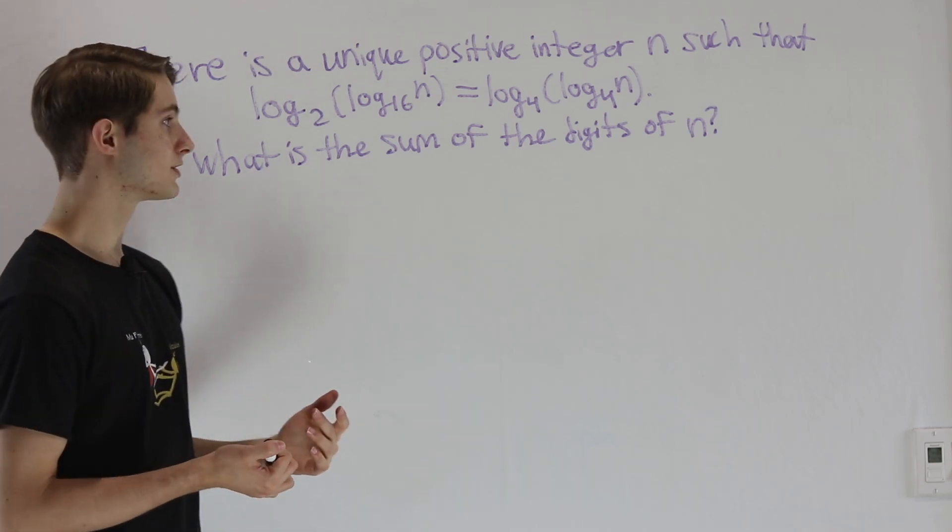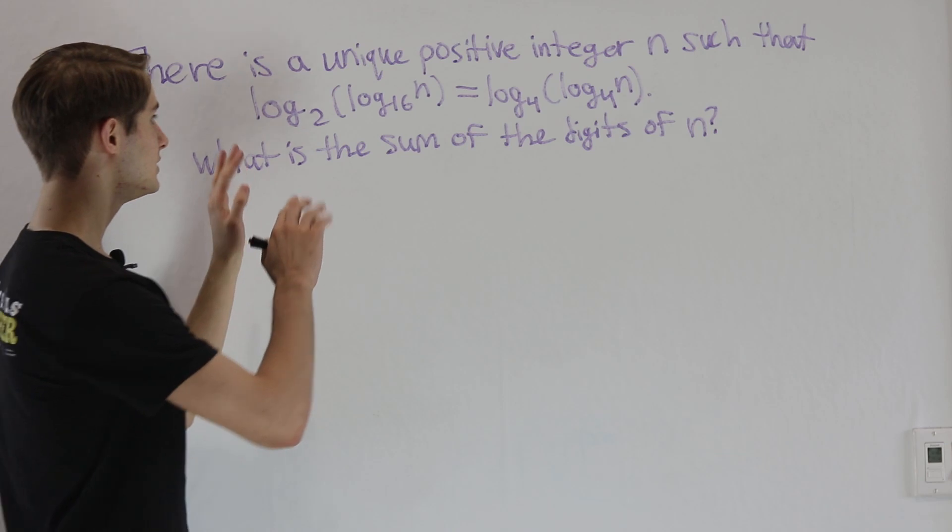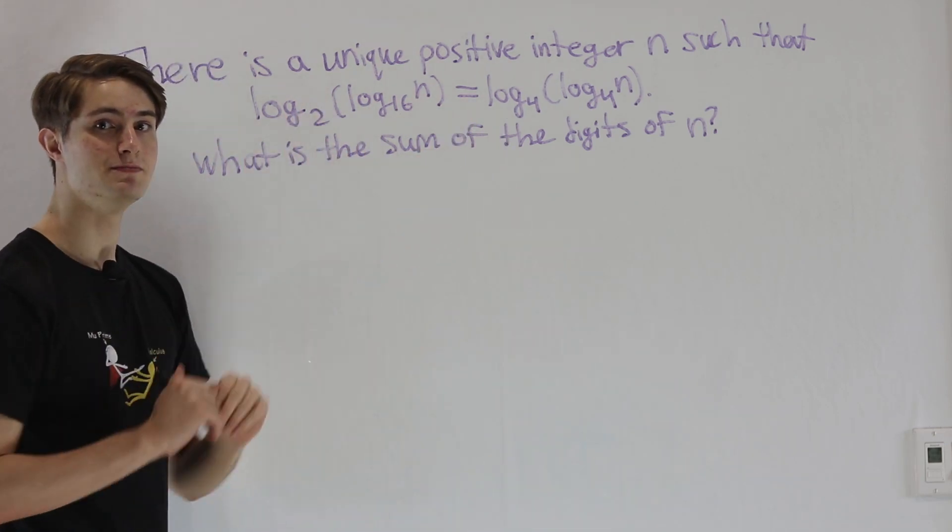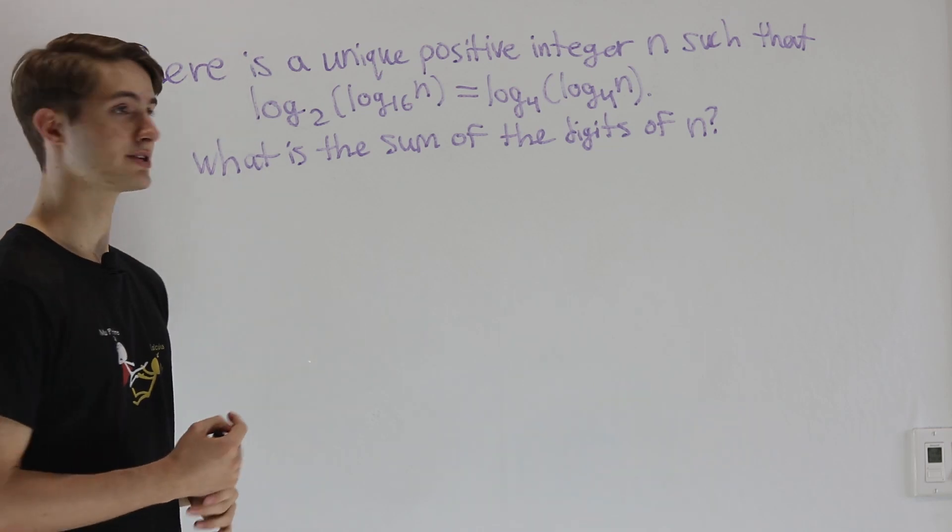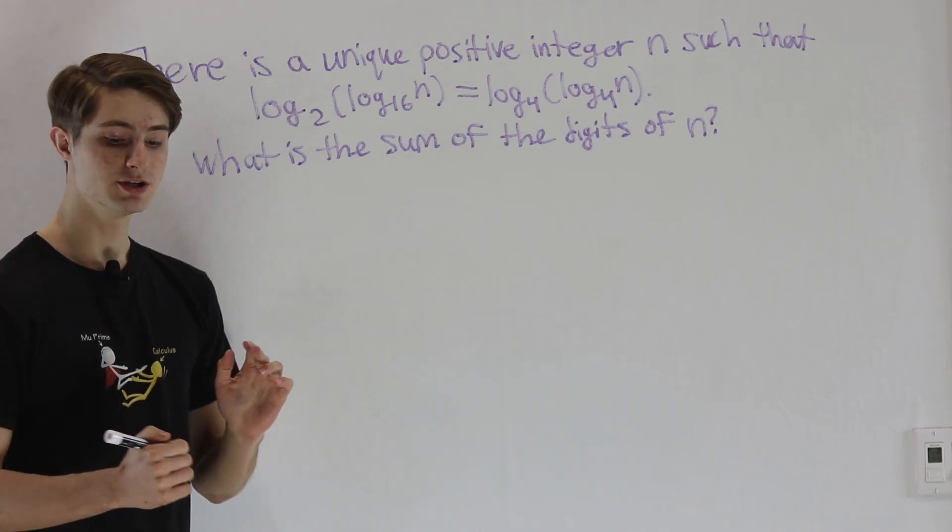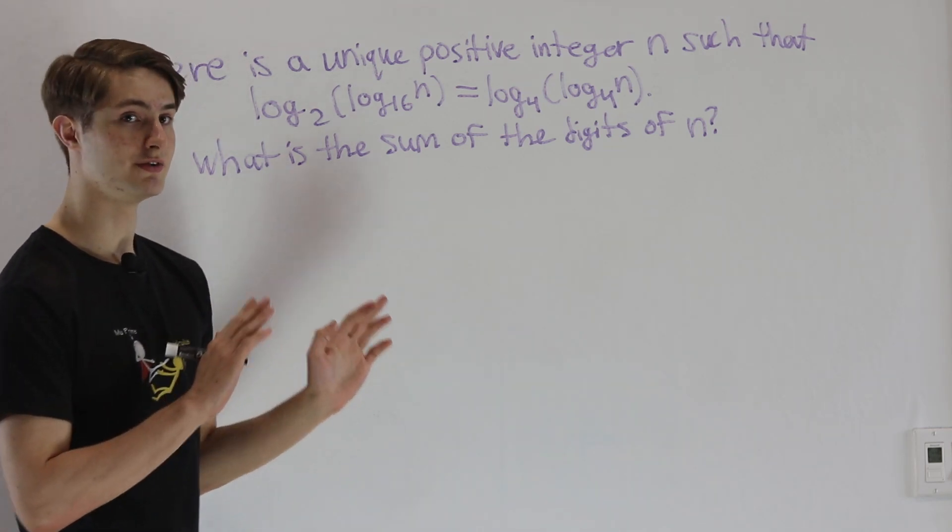One way to solve this problem is to actually turn all of the logarithms into base 2 using some rules of logs and then solve for n directly. But we're going to try a different method in order to solve it faster.